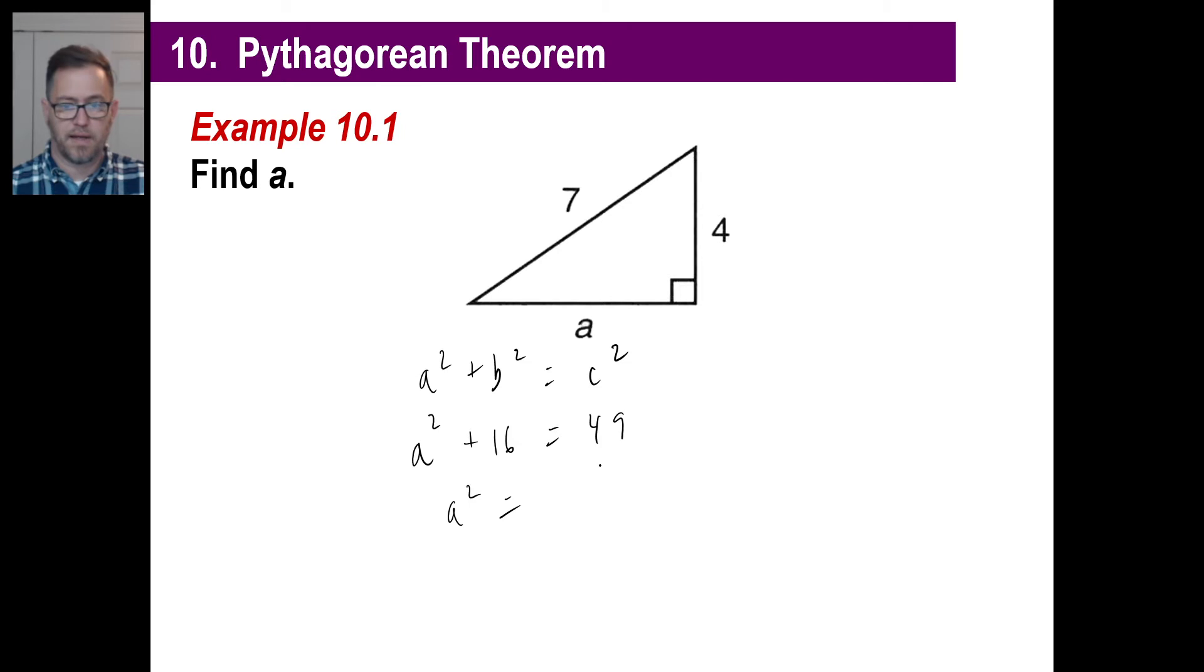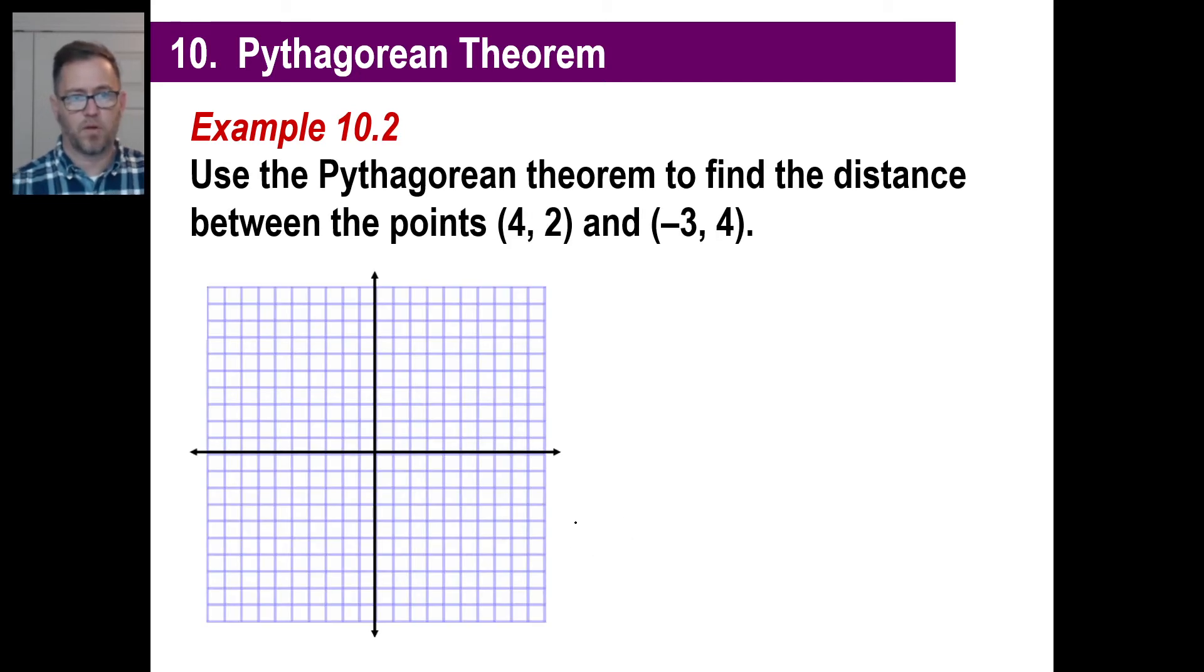So A squared is going to equal 49 minus 16, which is 33. There is no integer answer. There's no rational answer to the square root of 33. So you just keep it like that. Just write square root of 33. There you go. Leave it just like that.